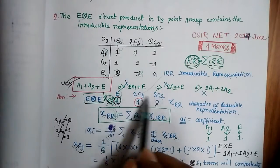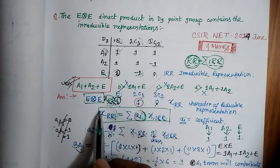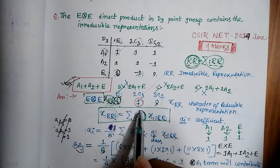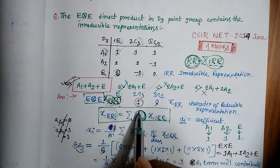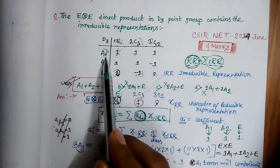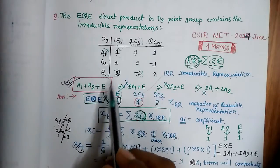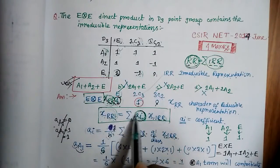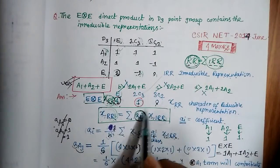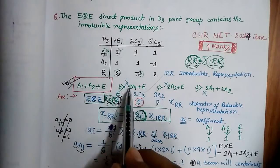Now, the formula relating reducible and irreducible representations is χ(RR) = Σ aᵢ · χᵢ(IRR), where aᵢ is the coefficient. The coefficient tells you how many times a particular irreducible representation contributes to form the reducible representation. The irreducible representations collectively form the reducible representation. To find the coefficients, you use the decomposition formula. Notice the class values from the character table: 1, 1, 1, 1, 2, 1.